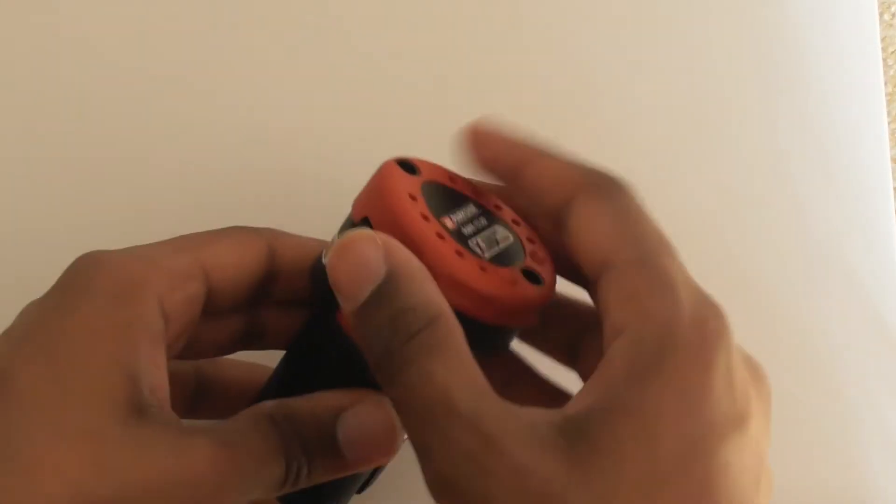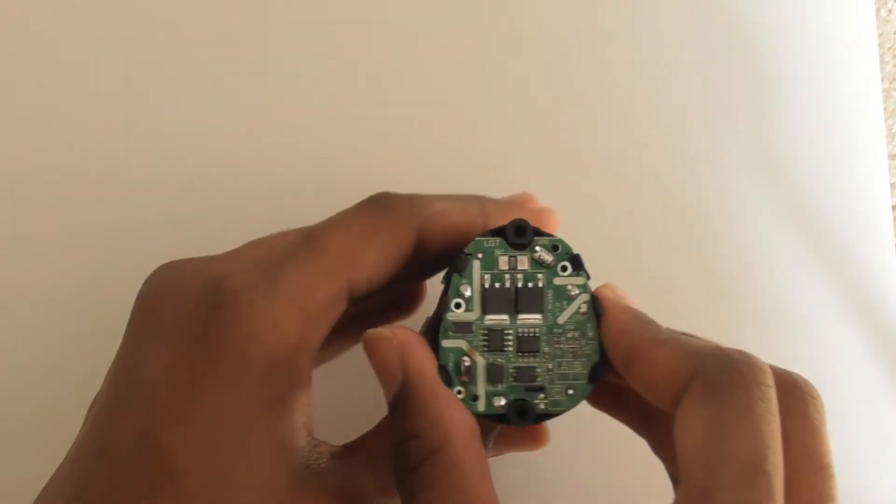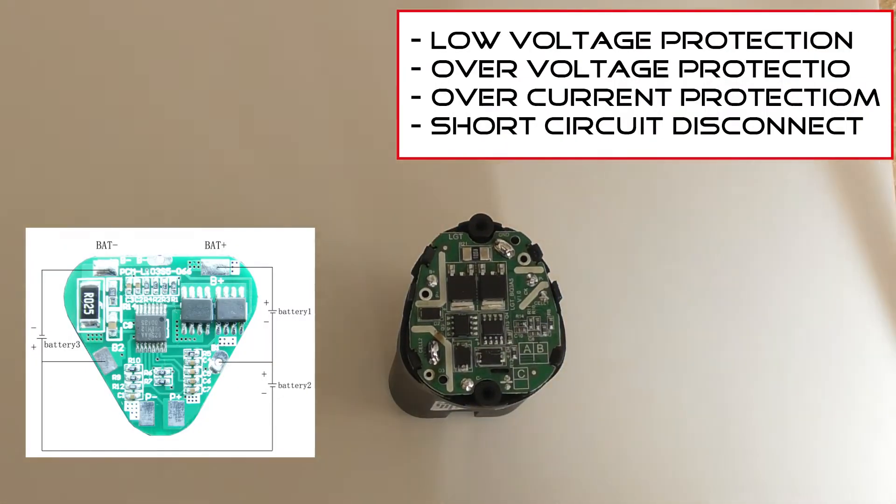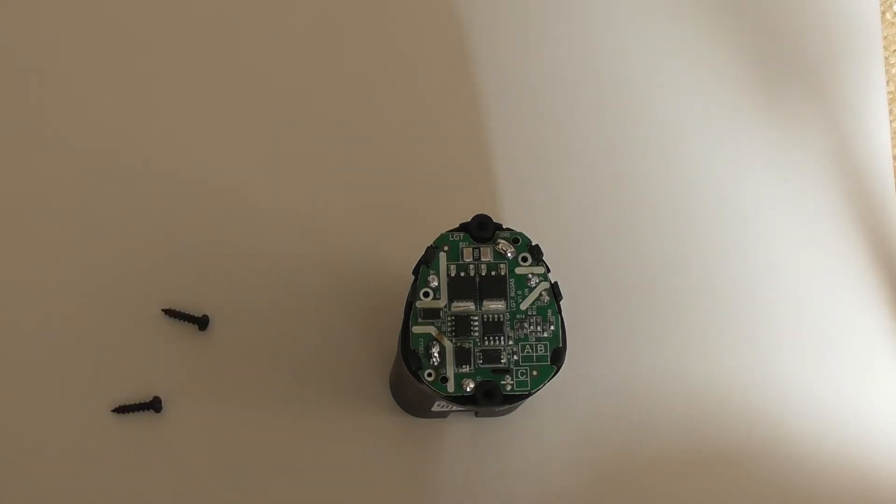Once we've done that, this lid will come straight off and we're presented with a PCB. So this is actually the protection circuit board. This will take care of things like if the battery voltage is too low, it will cut the power so you don't kill the batteries. And it also has other protection like overcurrent protection and low temperature protection.